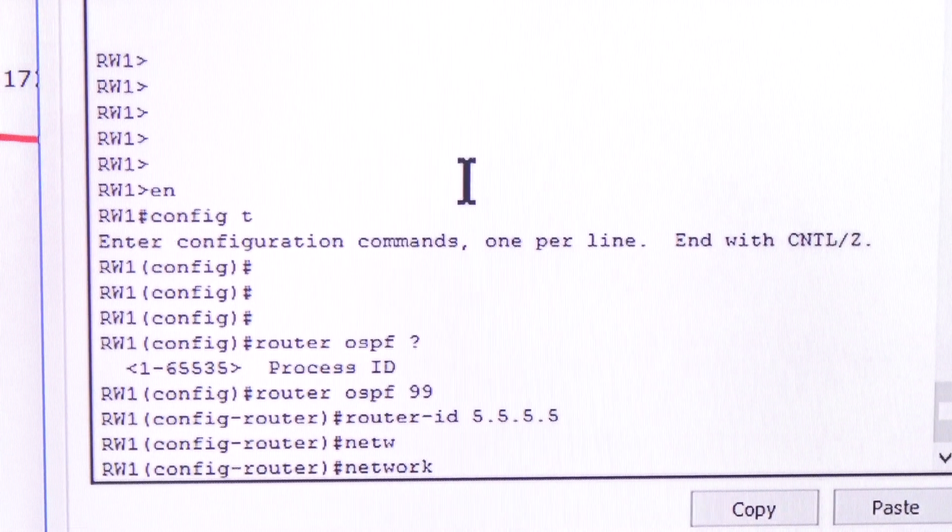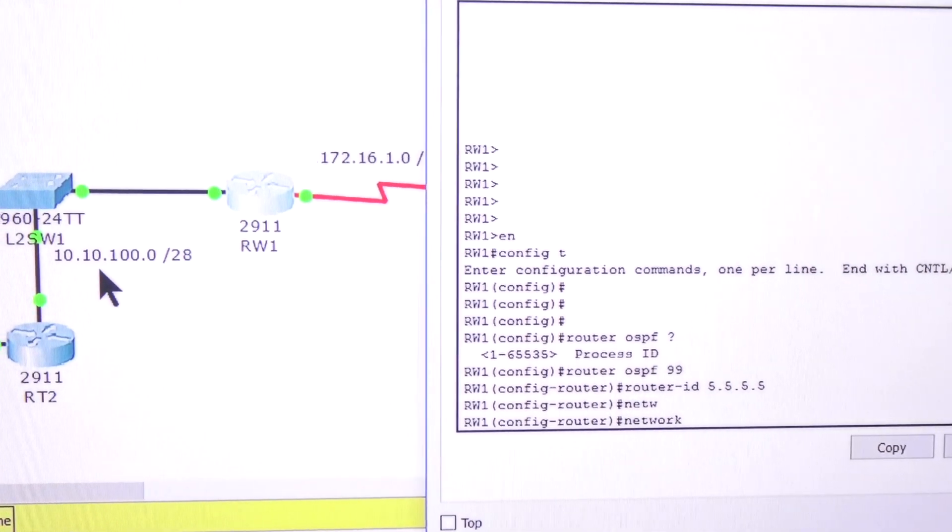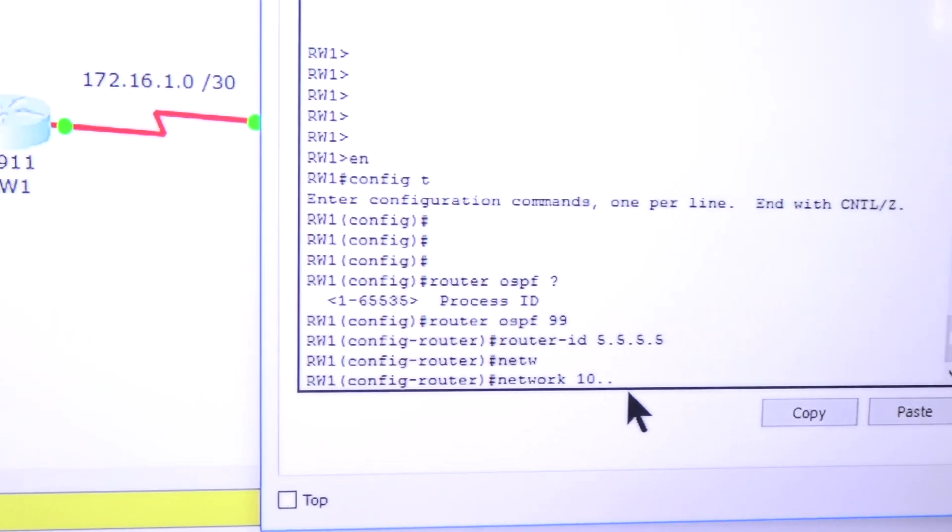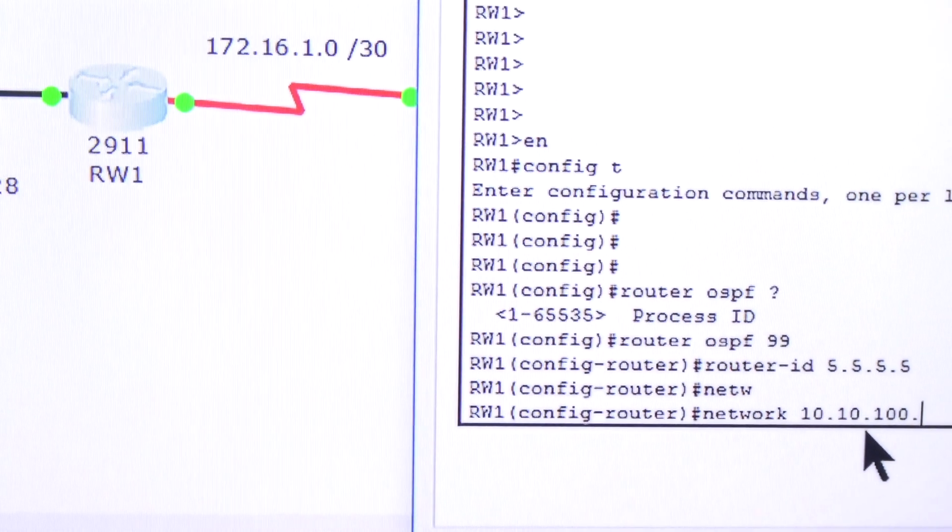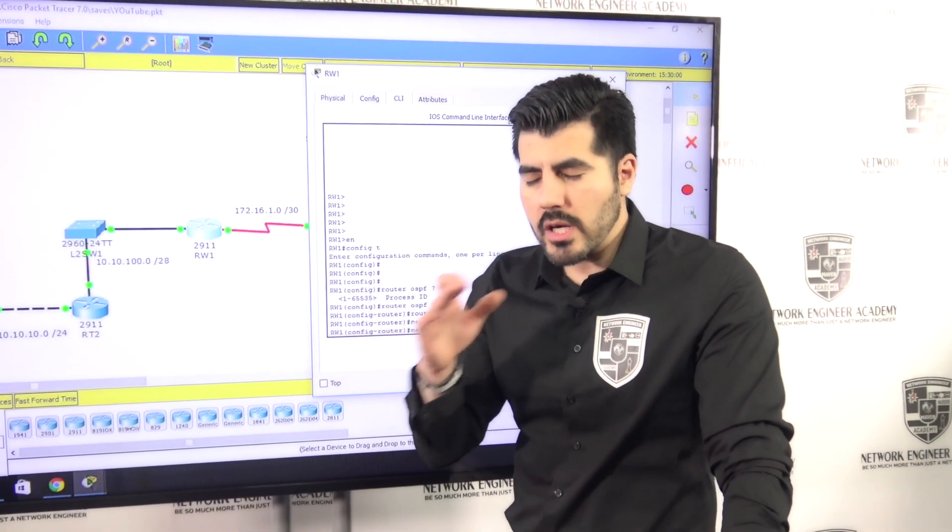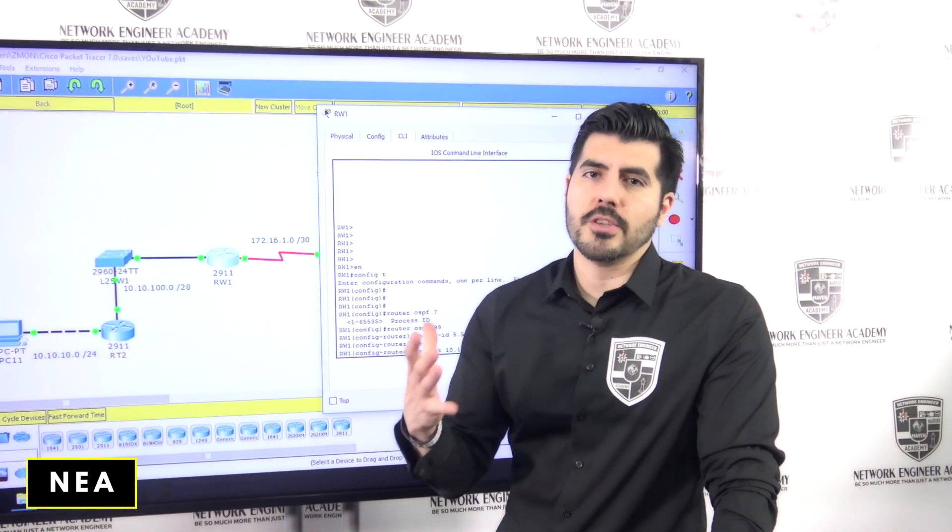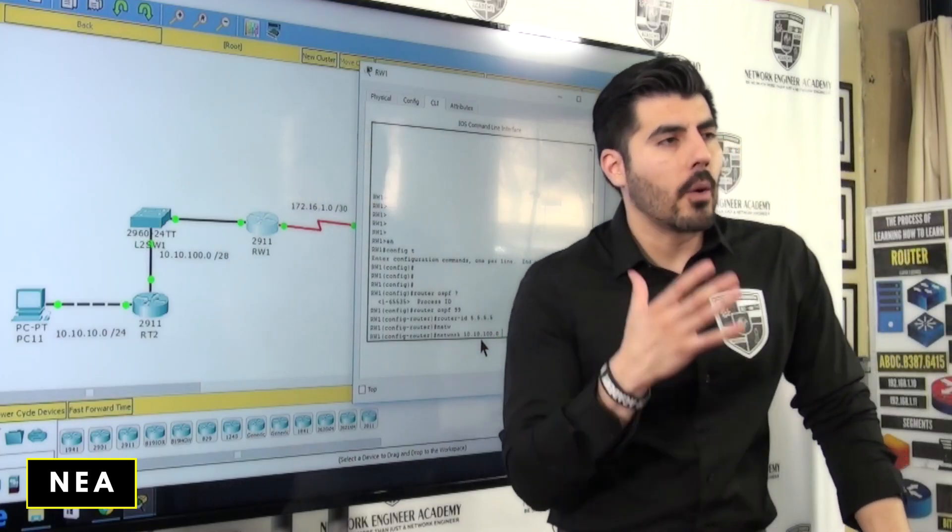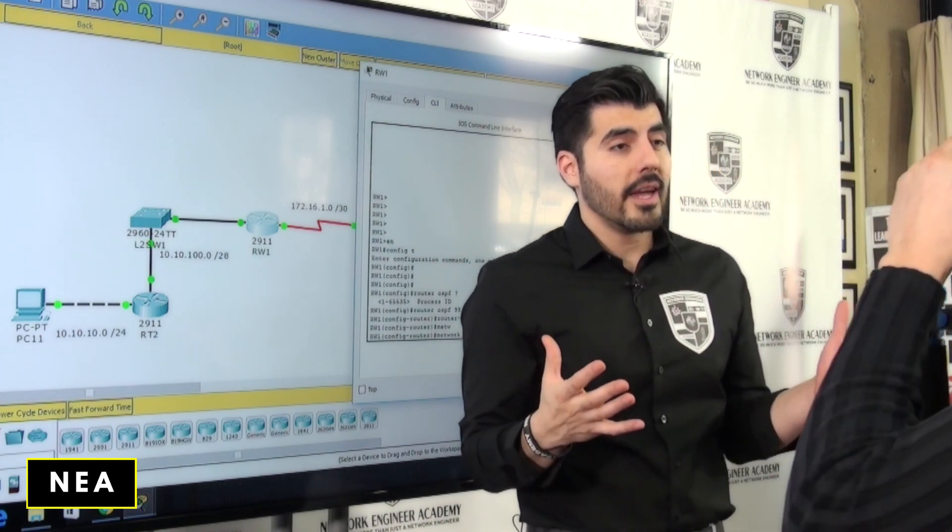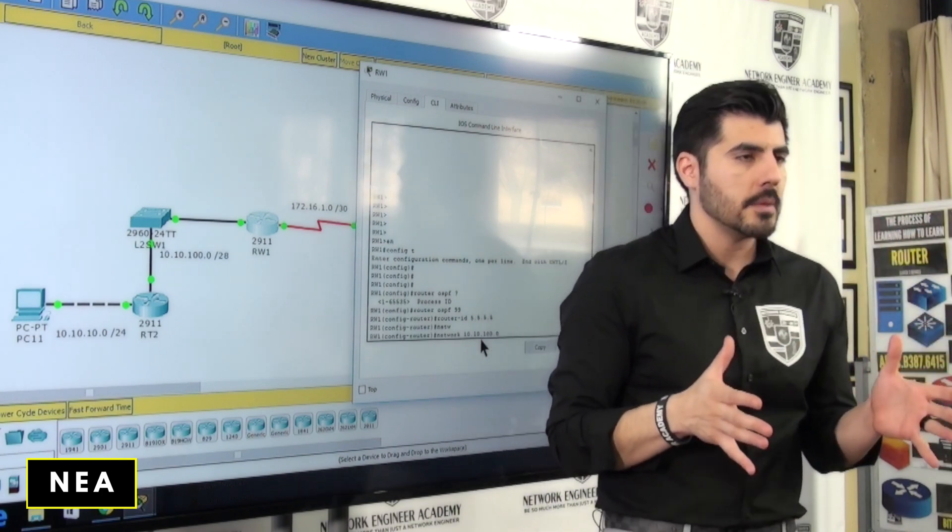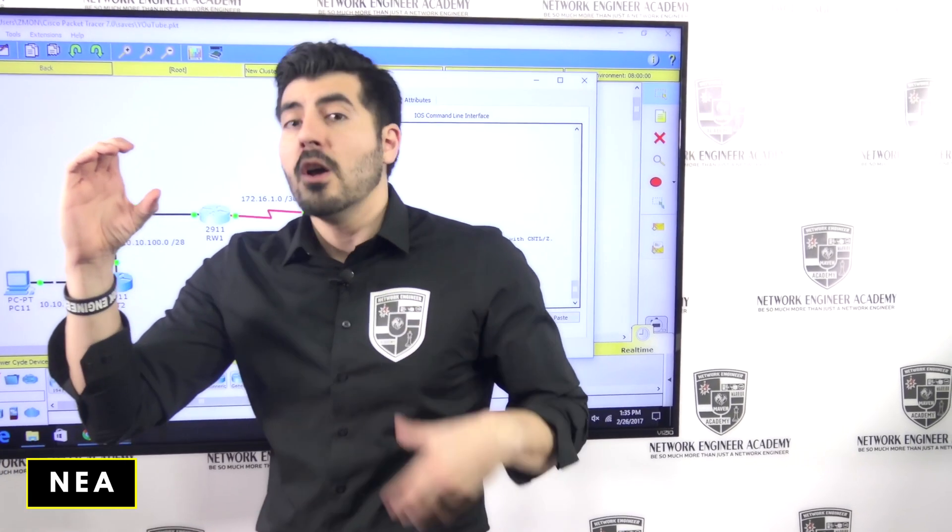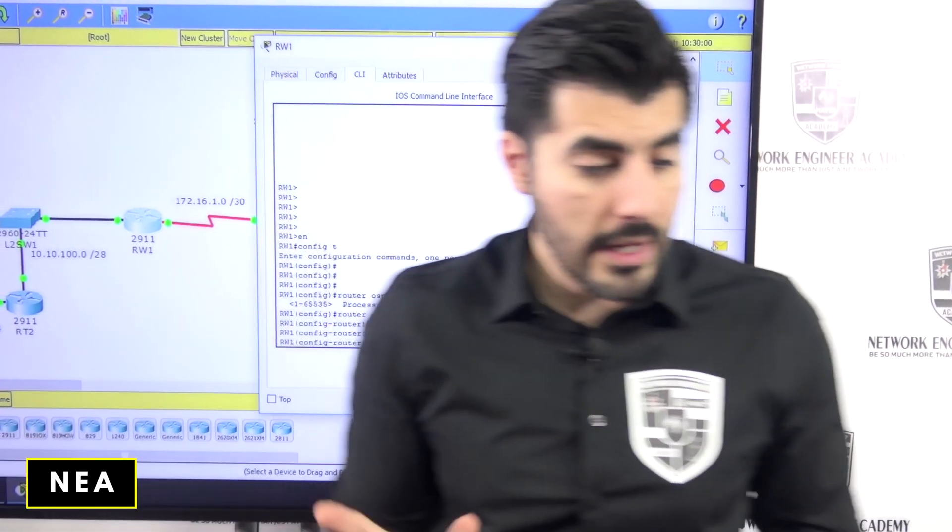So now what I'm going to do is network. Now this router has two networks to advertise. We have this network, 10.10.100.0, and we have 172.16.1.0. So let me do one first. I'm going to do 10.10.100.0. Now something with OSPF. And that's because of processing. They find out because the algorithm they run, OSPF, it's really high. So yes, there's a lot of resources like CPU and memory. So what happens? They found out that by using a wildcard mask, instead of the subnet mask, the process is lower. And probably you're thinking, what the hell is a wildcard mask? Google it. The only thing that I can tell you right now, so I don't take more time out of this video, is that it's the complete opposite of the subnet mask. So let's say the subnet mask is 255.255.255.0. What's the opposite? 0.0.0.255.